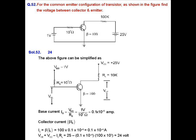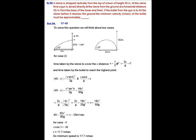Now, knowing the base current, we can calculate the collector current, which is β times Ib. β is given as 100 in this question. So Ic = 100 × 0.1 × 10⁻⁶ = 0.1 × 10⁻⁴ amperes. Applying KVL in the output loop, we write VCE = VCC − Ic × RL. Using the known values of VCC, RL, and the calculated Ic, we get VCE = 24 volts.